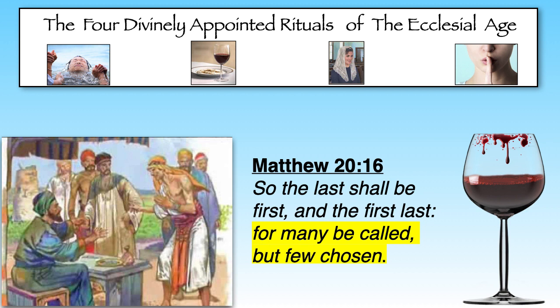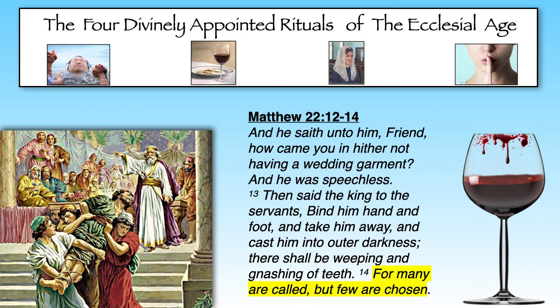Jesus also concludes the parable of the wedding of the king's son, when a man without a wedding garment is ejected from the wedding. In Matthew 22, picking up at verse 14: 'And he saith unto him, Friend, how camest thou in hither not having a wedding garment? And he was speechless. Then said the king to his servants, Bind him hand and foot and take him away and cast him into outer darkness. There shall be weeping and gnashing of teeth, for many are called, but few are chosen.'